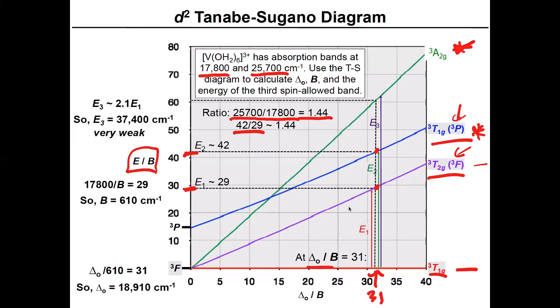Well, we have to calculate B. So we know the optical energy of the lowest energy transition. So we can just divide that by B and set it equal to 29 where we extrapolated to. And that tells you that the Racah parameter here is 610 wave numbers. So if the Racah parameter is 610 wave numbers, we also know that ΔO over B is 31.